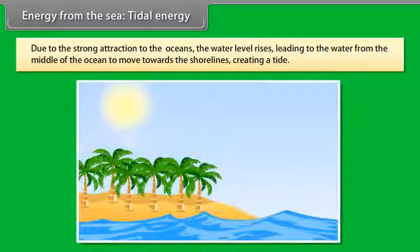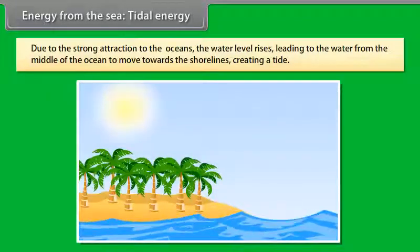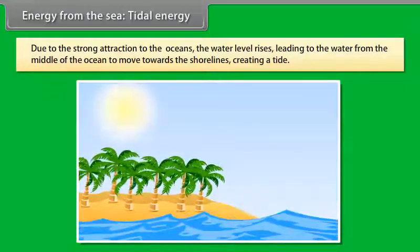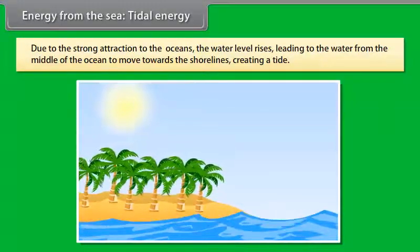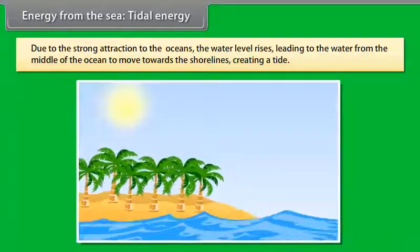Due to the strong attraction to the oceans, the water level rises. This leads to the water from the middle of the ocean to move towards the shorelines, creating a tide.